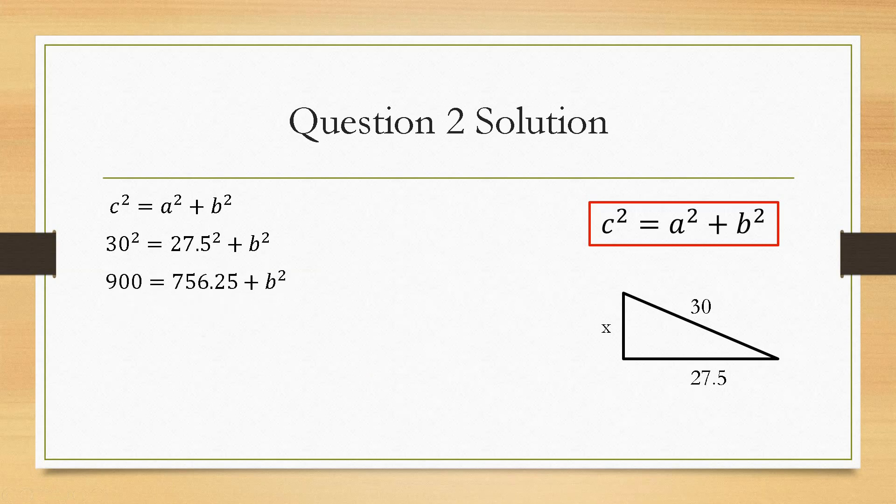Just pop the numbers in. Now, you will be given a calculator for this. So, we get 900 equals 756.25 plus b squared. Now, if you follow the same procedure, you will end up with a value of b equals 12 centimetres.